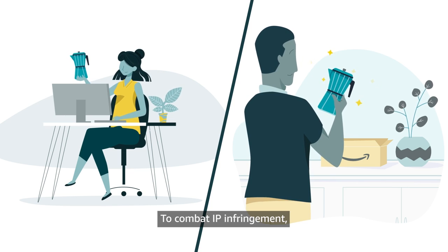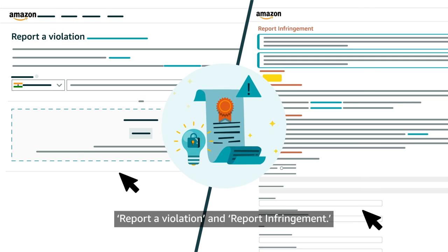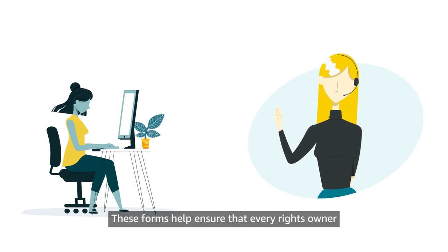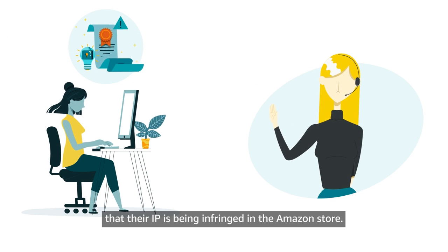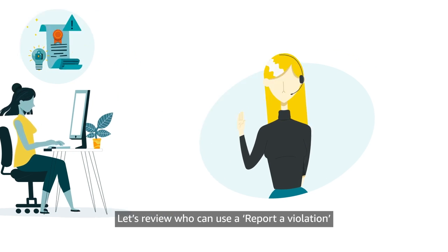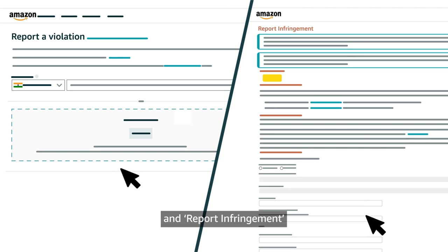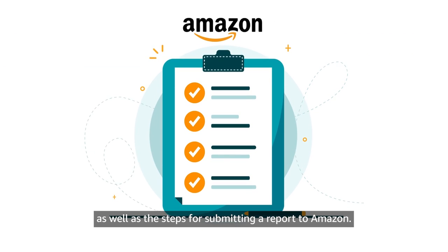To combat IP infringement, we offer two reporting forms: Report a Violation and Report Infringement. These forms help ensure that every rights owner can notify Amazon when they suspect their IP is being infringed in the Amazon store. Let's review who can use each form as well as the steps for submitting a report to Amazon.